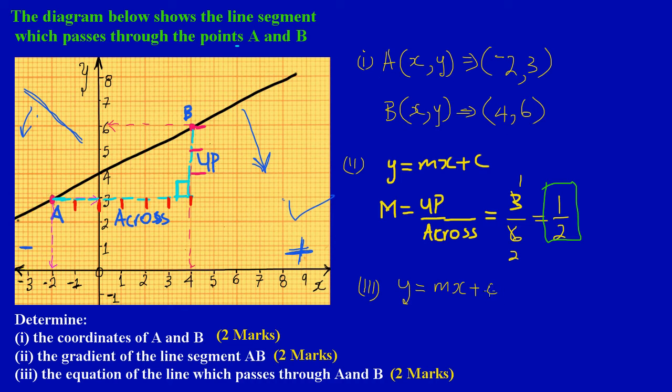The y-intercept is where the graph passes through the y axis. Now, having found the gradient in part 2, we can say y equals... When writing the equation of a straight line, y and x are always in the equation. So we have y equals, and I'm going to substitute my gradient here. My gradient worked out to be a half, so I'm going to replace m with a half of x.